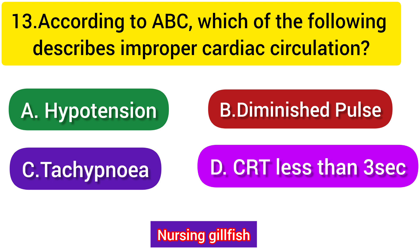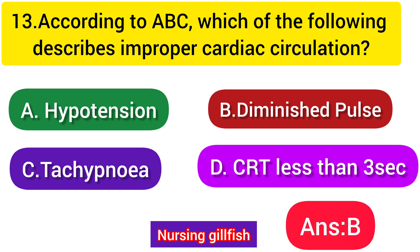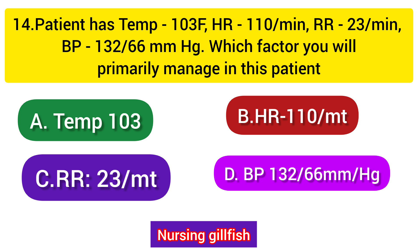Next question: According to ABC assessment, which of the following describes improper cardiac circulation? Option A: Hypotension, Option B: Diminished pulse, Option C: Tachypnea, Option D: CRT less than 3 seconds. When assessing circulation in ABC, diminished pulse indicates improper cardiac circulation. Option B - Diminished pulse is the correct answer.